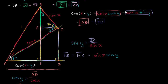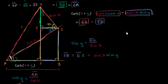So cosine of x plus y, which equals segment AF, equals segment AB minus segment FB, which equals cosine x times cosine y, minus sine x times sine y. And we are done.